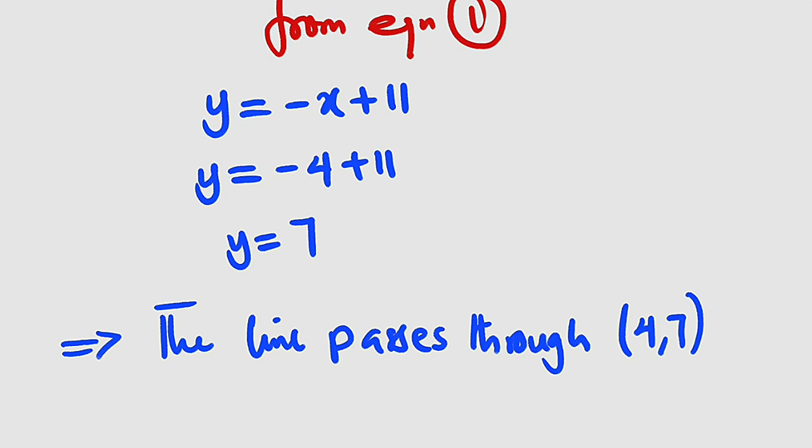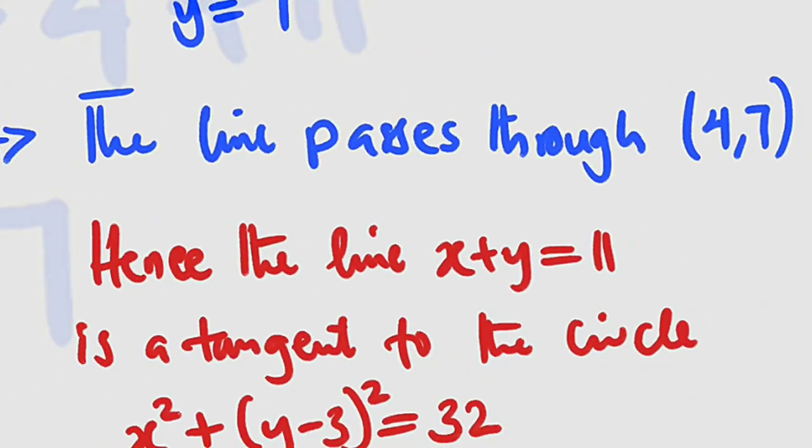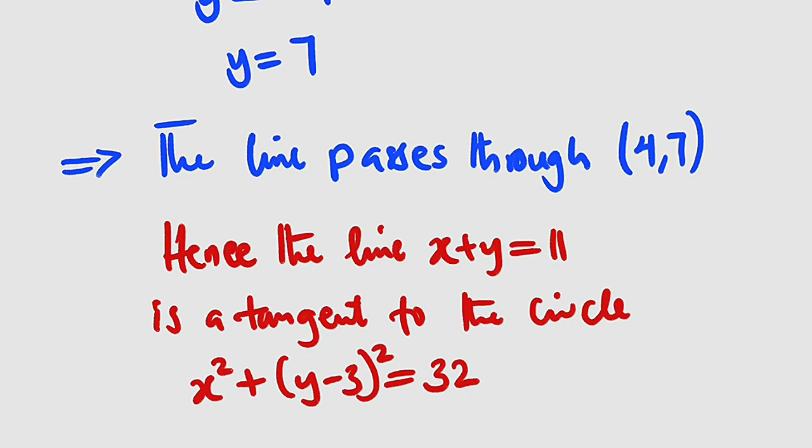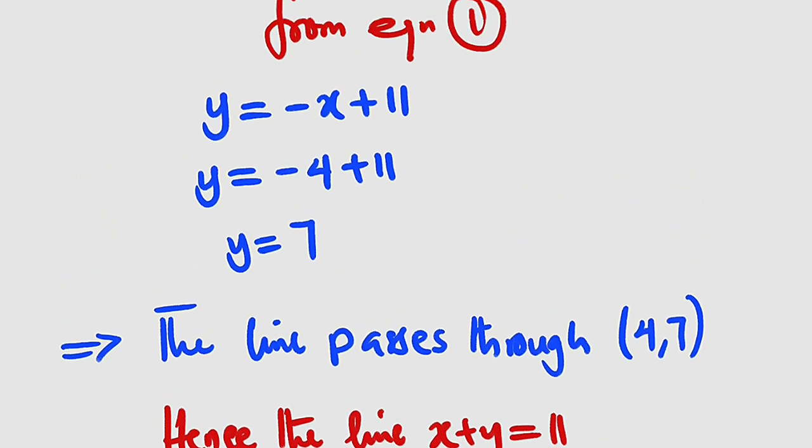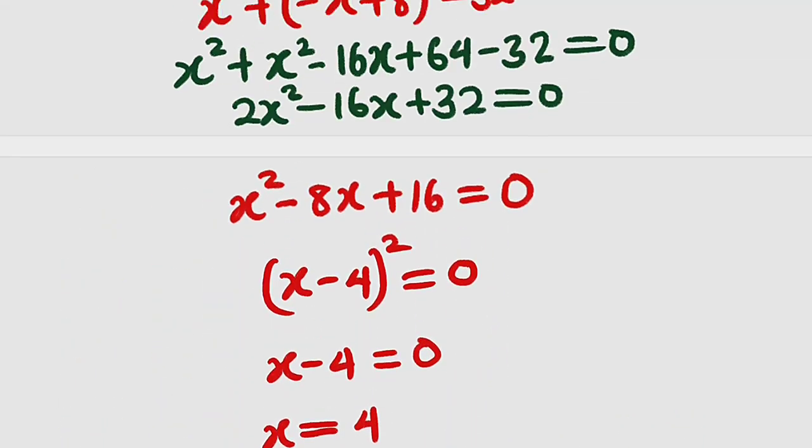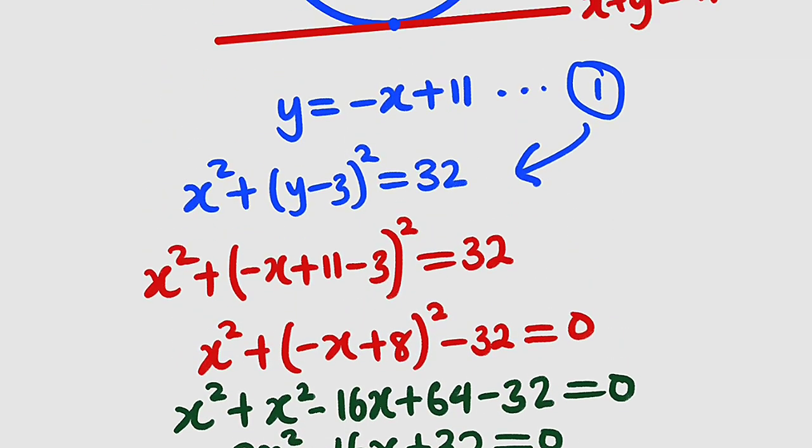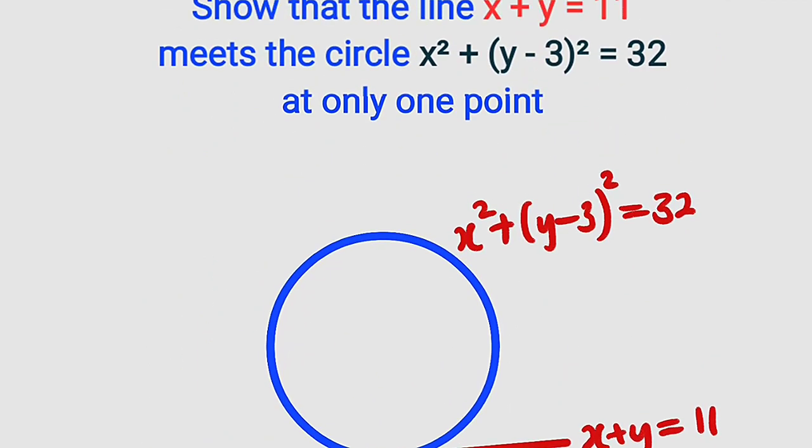And since it passes through only one point, it means that line is a tangent. And hence, the line x plus y equal to 11 is a tangent to the circle x squared plus y minus 3 whole squared equal to 32. Thank you for watching. Do share to your learning colleagues, and don't forget to subscribe to my YouTube channel for more exciting videos. Bye-bye.